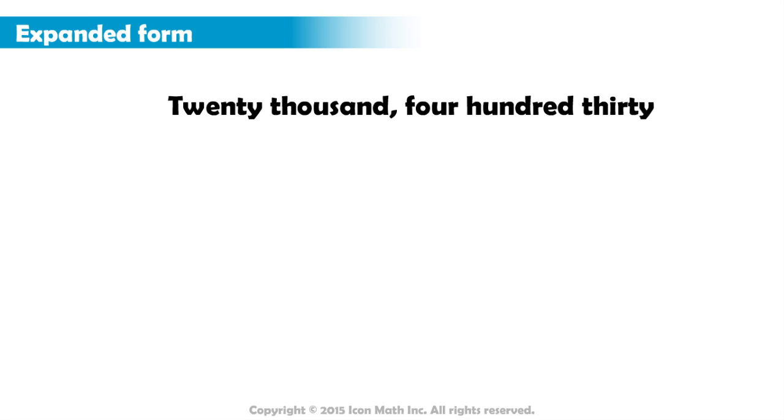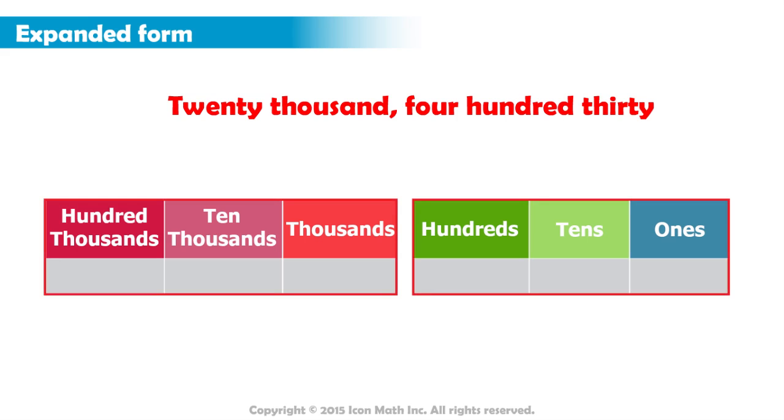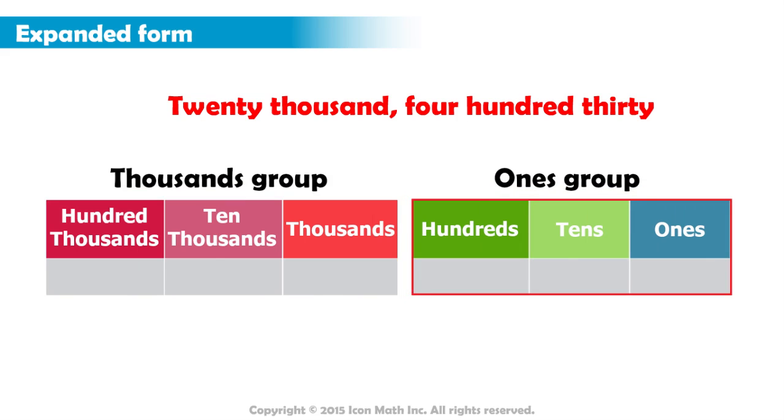To do that, we first write the number in a place value chart. The number is separated into groups, the thousands group and the ones group.